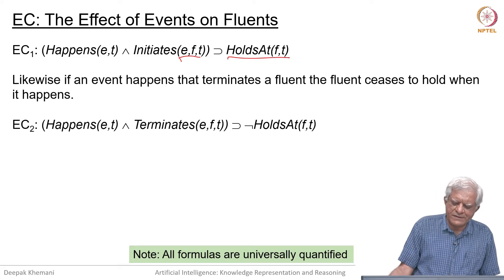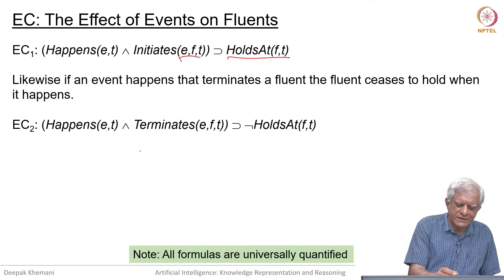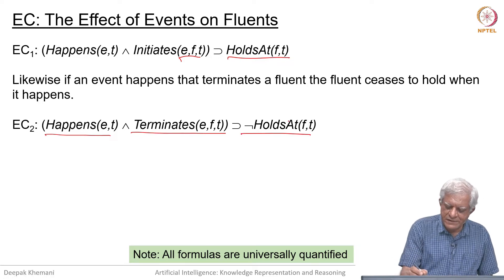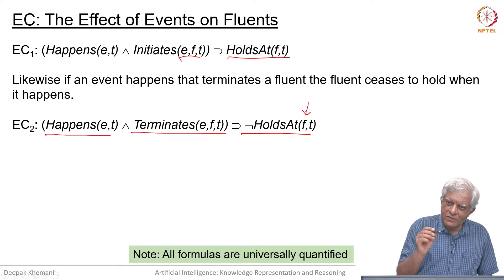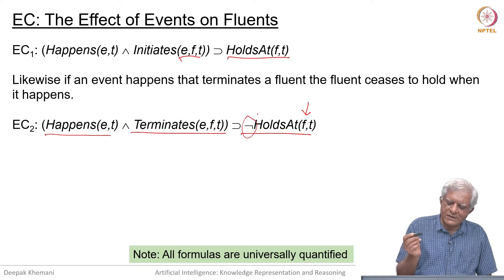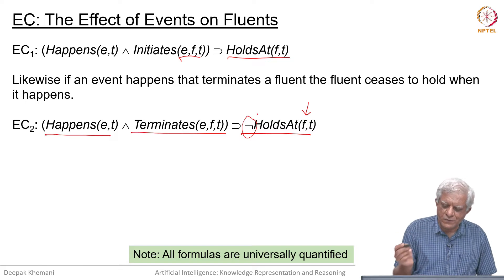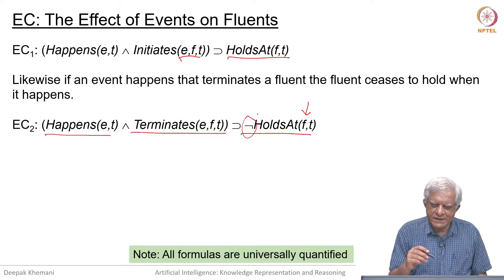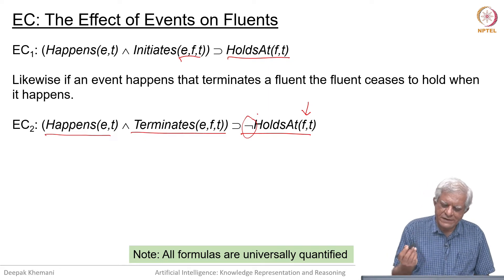Likewise, if it terminates the fluent, then we can say that if an event happens and it terminates that fluent, then holds-at is talking about whether this fluent holds to be true at time t — or in this case the fluent does not hold to be true at time t. So 'holds' is saying that the fluent is true, 'happens' is saying that an event is happening, and 'initiates' is a relation between events and their effect on fluents.